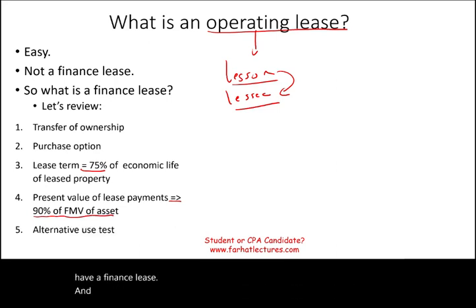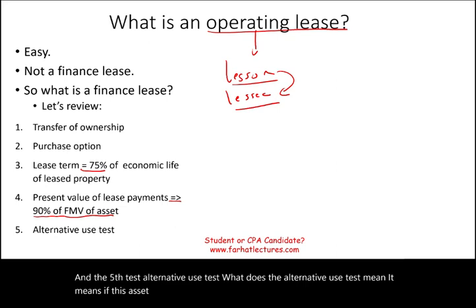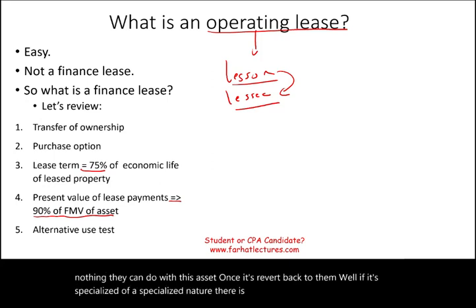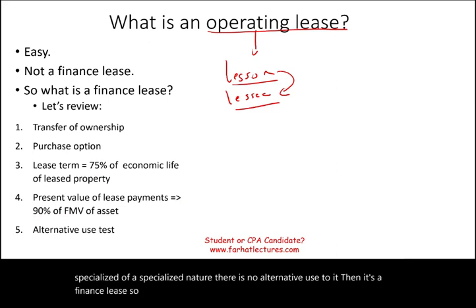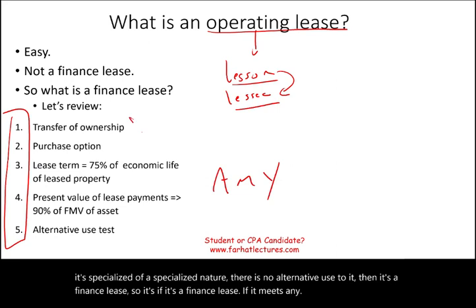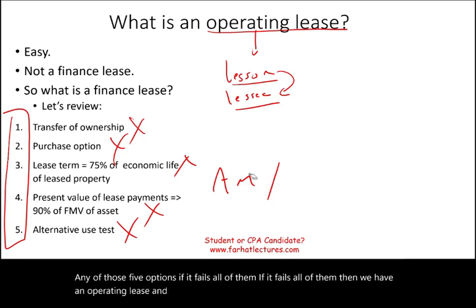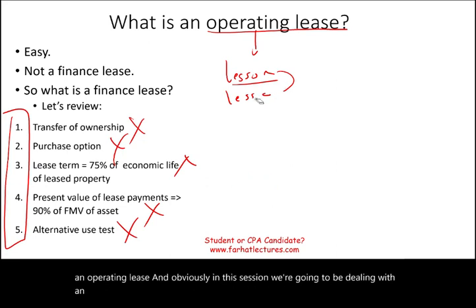Test five: the alternative use test. If this asset is unique to your business — specialized in nature with no alternative use for the lessor once returned — then it's a finance lease. If the lease meets any one of those five tests, it's a finance lease. If it fails all of them, we have an operating lease.